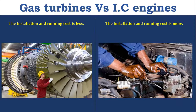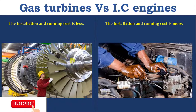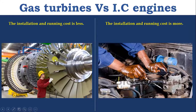Installation and running cost is less in gas turbine and more in IC engine. Gas turbine operates at low pressure, produces uniform torque, and has a simple lubrication and ignition system with fewer moving parts — these are the main reasons for low installation and running cost. Whereas in IC engine, it operates at high pressure, produces non-uniform torque, and has difficult lubrication and ignition systems, which are the reasons for high installation and running cost. Also, the moving parts of IC engine are more.